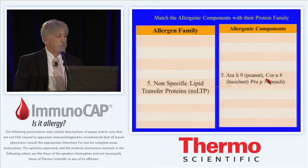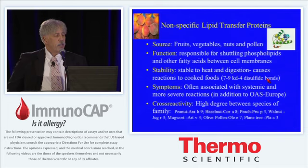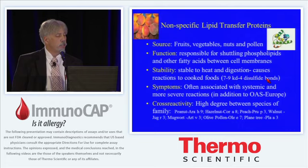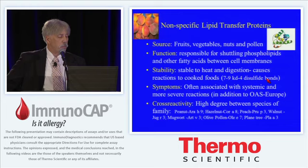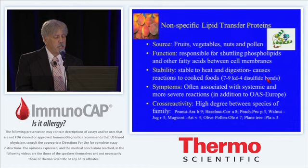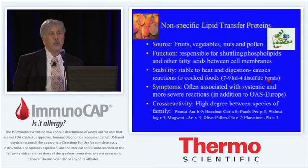The next group are the nonspecific lipid transfer proteins: AH9 in peanut, CORA8 in hazelnut, and PRU-P3 in peach. These are found in fruits, vegetables, nuts, and pollens, and are responsible for shuttling phospholipids and other fatty acids between cell membranes. They're stable to heat and digestion, thus causing reactions in cooked foods as well, and are often associated with systemic and more severe reactions, as well as oral allergy syndrome. There's a high degree of cross-reactivity in this family, with peanut AH9, hazelnut CORA8, and PRU-P3 being most commonly reported in the literature.